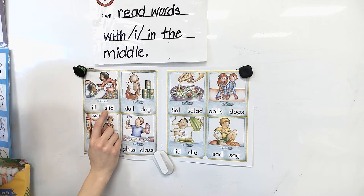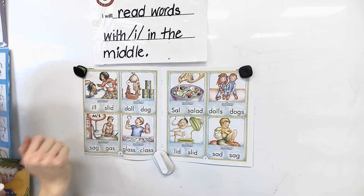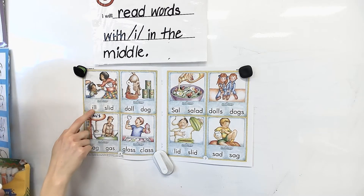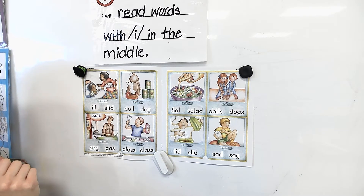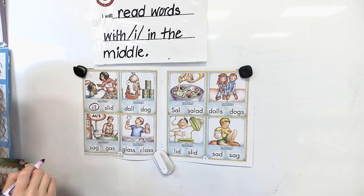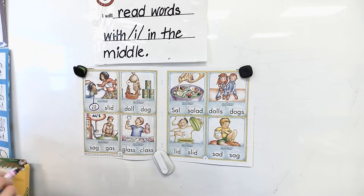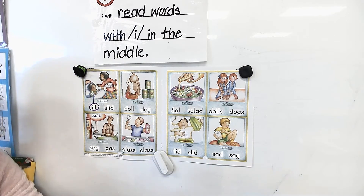Let's see what this word says. Sound it out with me — S-L-I-D. Slid. Slid. Does this look like he's sliding on something? Or is he ill — is he sick? He's ill. So with your pencil, you are going to circle the word ill and draw a line to the little boy who is ill. He is sick. Park your pencil.